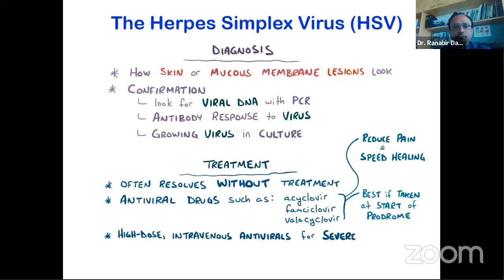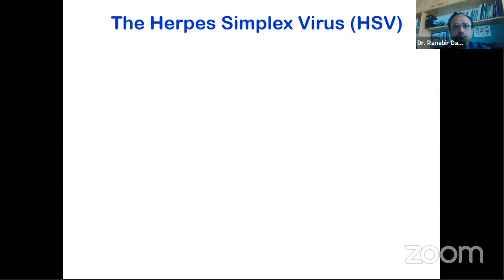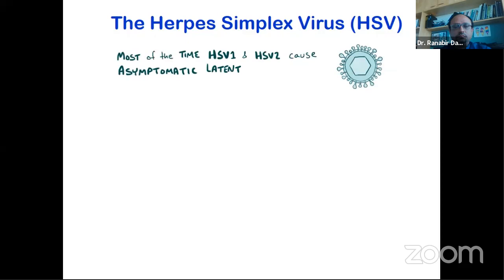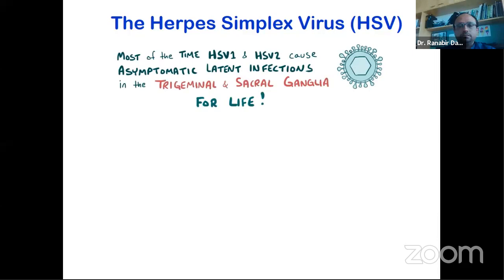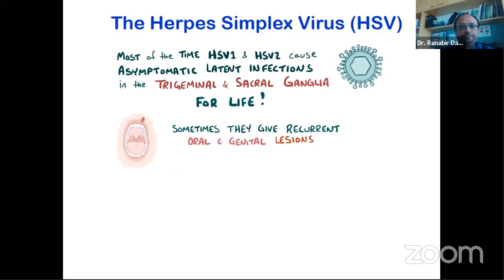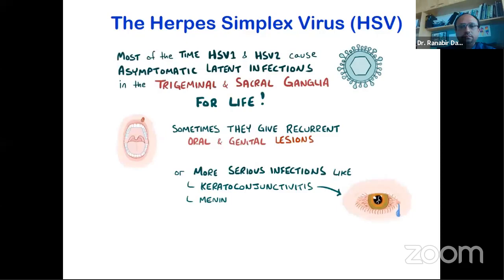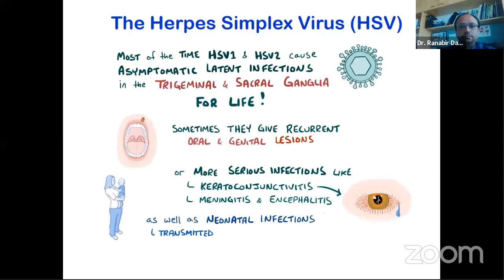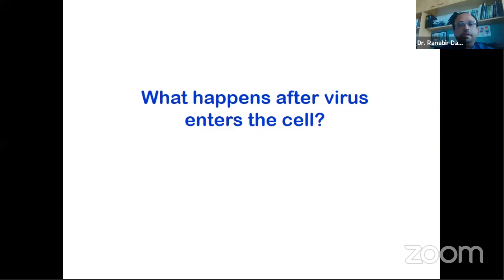High-dose intravenous antivirals might be given in more severe or life-threatening situations. As a quick recap: most of the time, HSV1 and HSV2 cause asymptomatic latent infections set up in the trigeminal and sacral ganglia for life. But sometimes they cause symptoms like recurrent oral and genital lesions. They can also cause more severe infections like HSV keratoconjunctivitis, meningitis, and encephalitis, as well as neonatal infections usually transmitted when a baby passes through infected vaginal secretions.